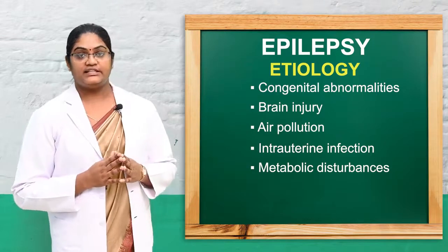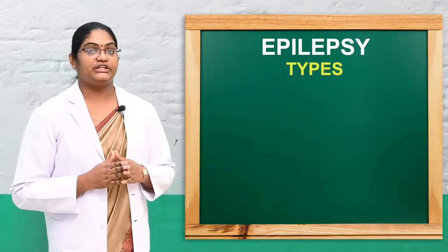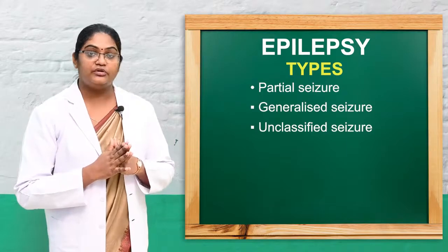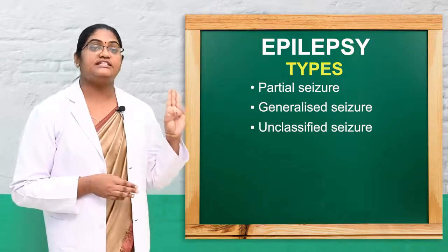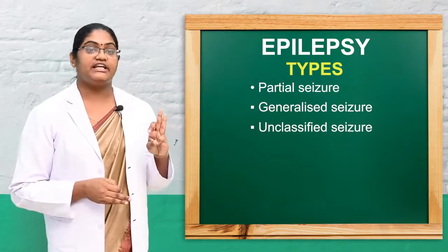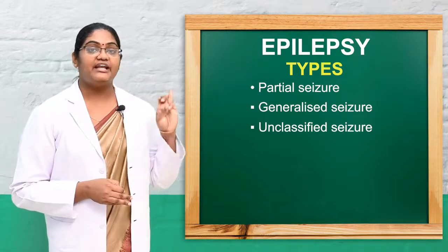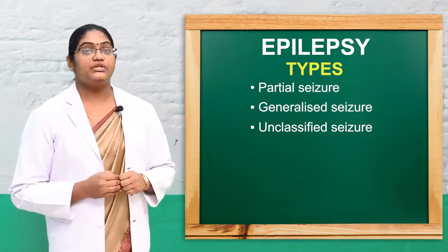Next we will see the classification of seizure. Seizures are classified mainly into three types: the first is partial seizure, the second is generalized seizure, and the third is unclassified seizure.